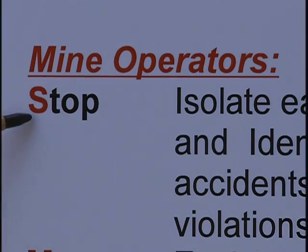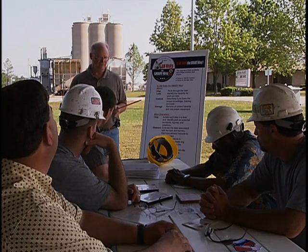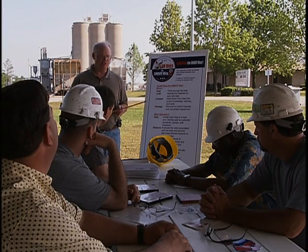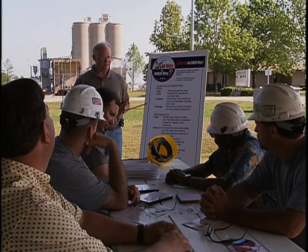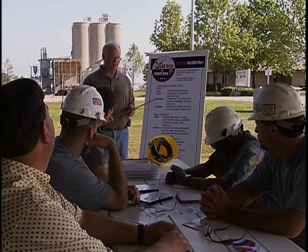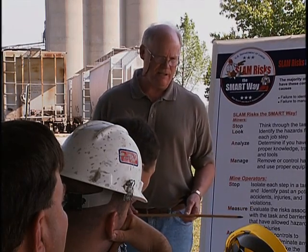Our team will take the lead in this process to make sure that it's carried out. The first thing the team will do is stop to isolate each step in a task to identify past and potential accidents, injuries, and violations. Once the team does this for a particular task, they will present their findings to all of our miners. Each miner will be given an opportunity to comment, and the team will incorporate their input. Then the task is measured by evaluating the risk and the barriers that have allowed the hazards to cause injuries.